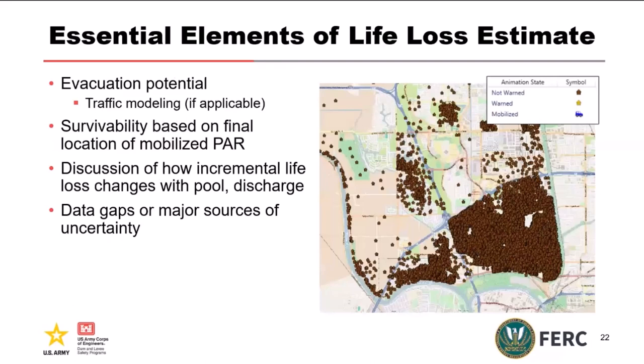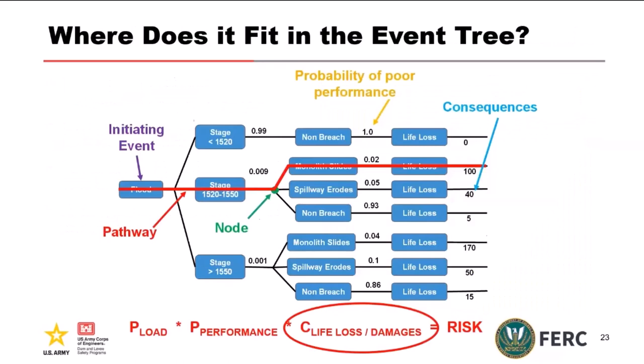Show of hands — has anybody seen an event tree similar to this? This is a little bit more expansive than the couple we saw earlier. You have your flood loading, your system response — which is what the team will gather in the room and go through and elicit — and then you have your consequences. All of those components combined is what gives you your project risk, showing what that looks like from start to finish.